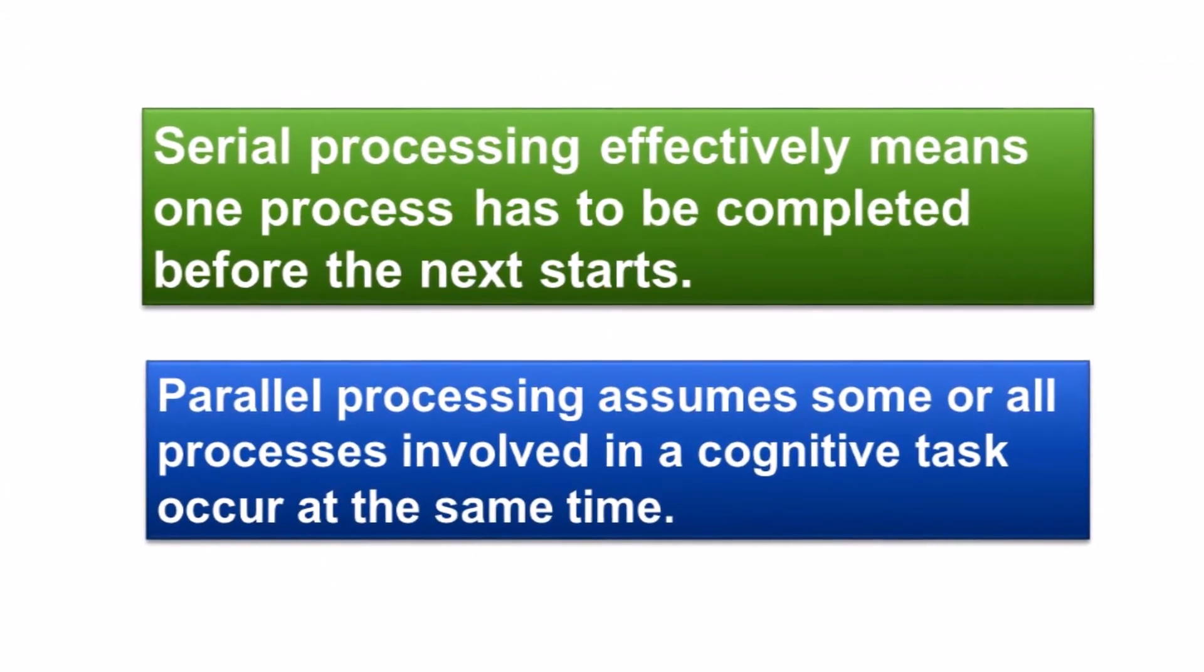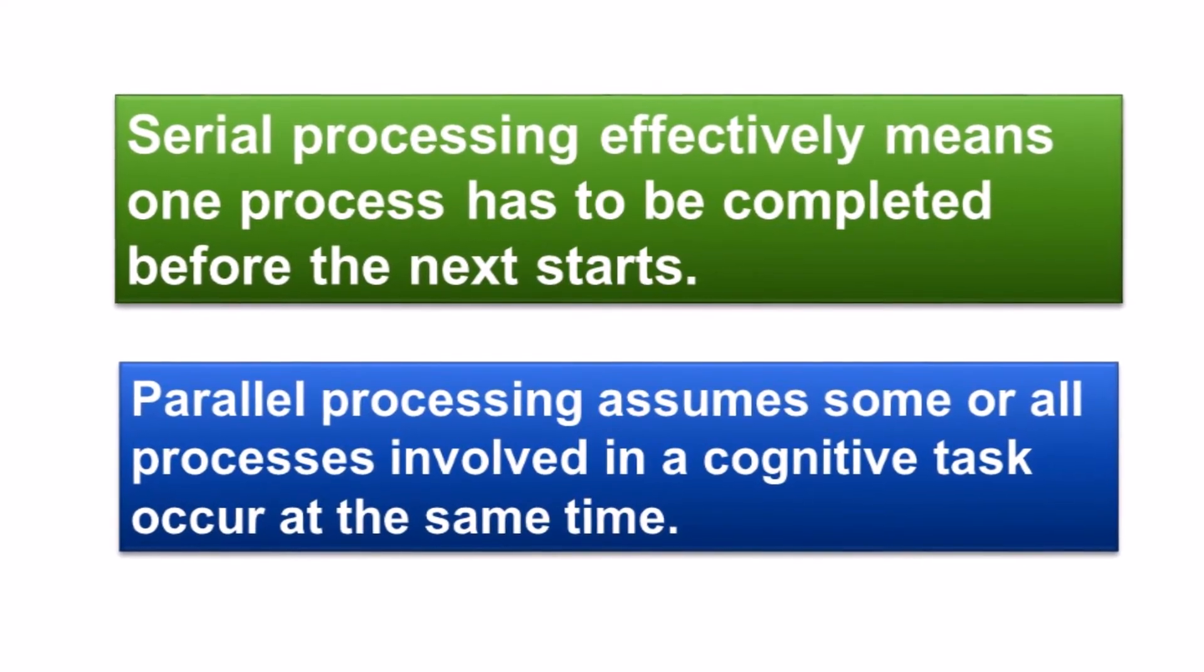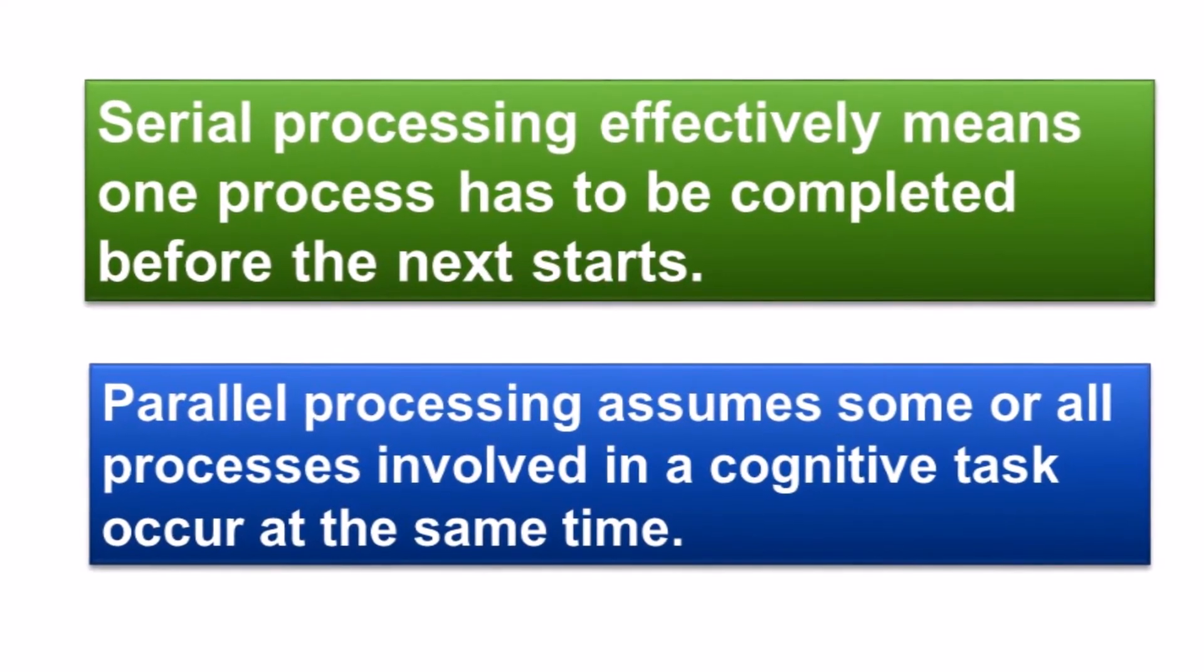Serial processing effectively means one process has to be completed before the next starts. Parallel processing assumes some or all processes involved in a cognitive task occur at the same time.